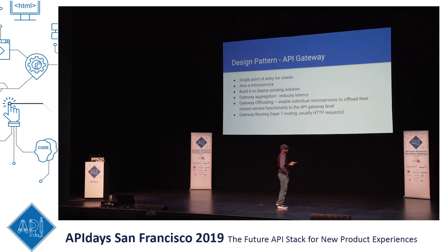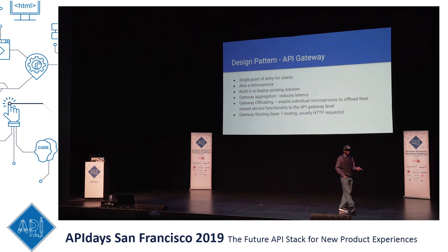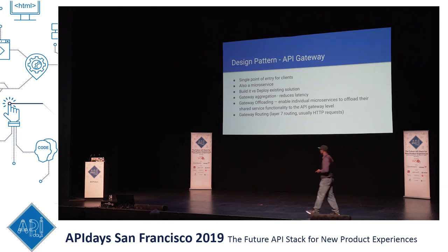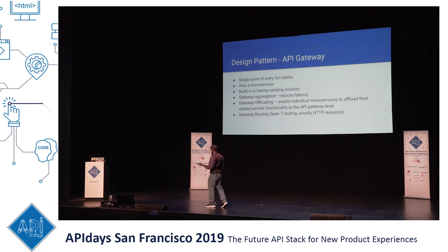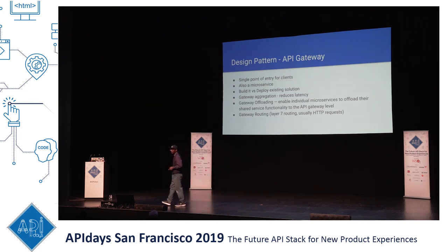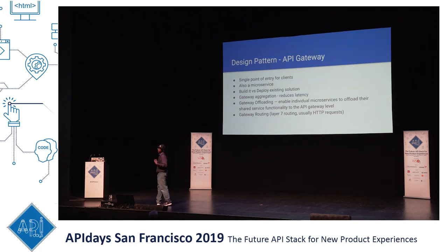You can either build one yourself or you can deploy an existing solution. Apigee is one platform you can use. Amazon and Google also have their own. They all pretty much do the same thing — just whatever gives you the best price for your project. Or you can just build it yourself; I prefer the build-it-yourself option.